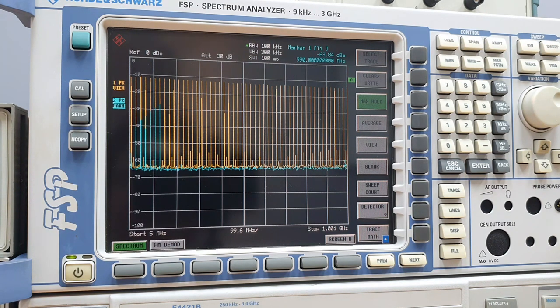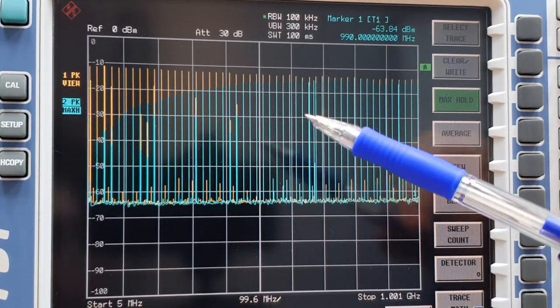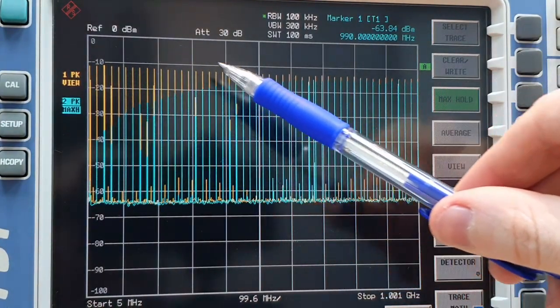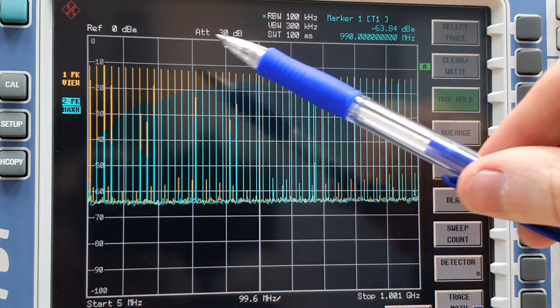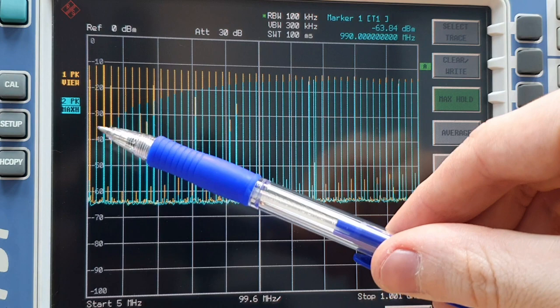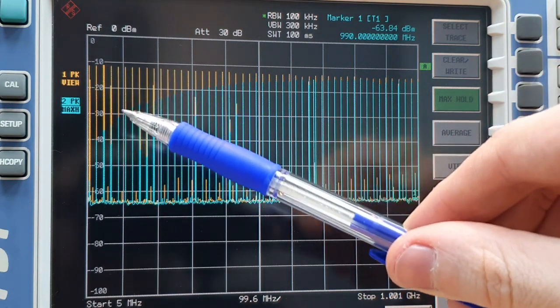Look at this guys. Pretty beautiful. Look at this guys. What you're actually seeing here guys is the insertion loss is the drop in the yellow signal. Okay. When the switch is in the active state and the isolation is the difference between the active state and the off state.